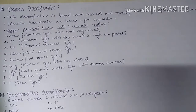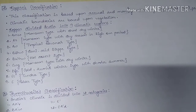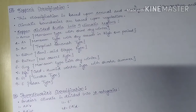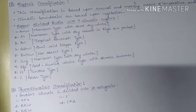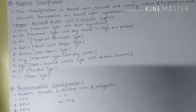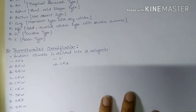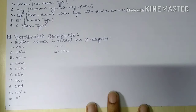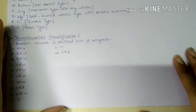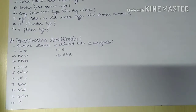Next is Thornthwaite's classification. He gave two indices: the Precipitation Efficiency Index and the Thermal Efficiency Index. By combining these indices, he arrived at 120 possible combinations. Out of these, 32 climatic regions were found to exist in the real world, and out of those 32, India has 12 climatic types.